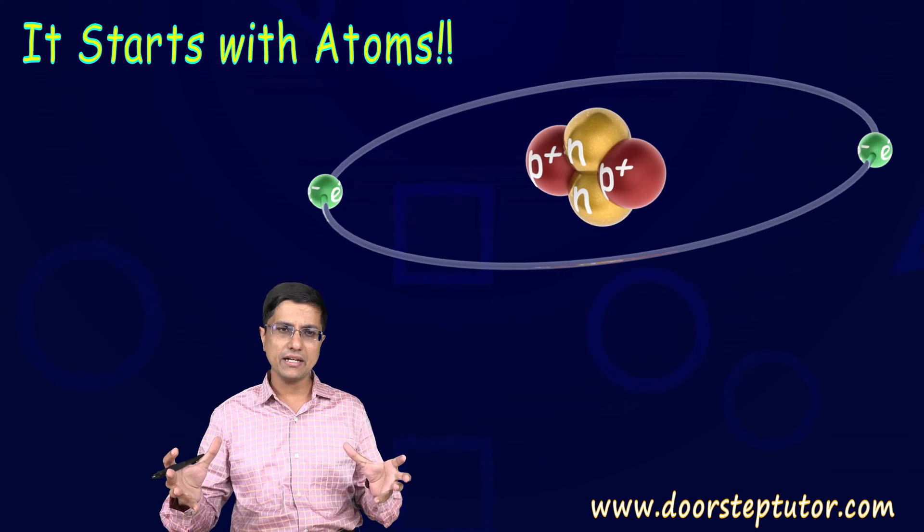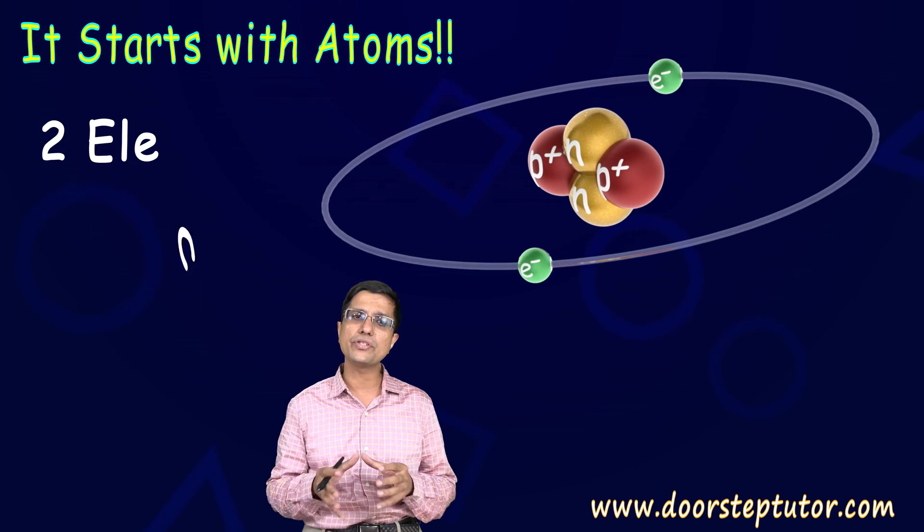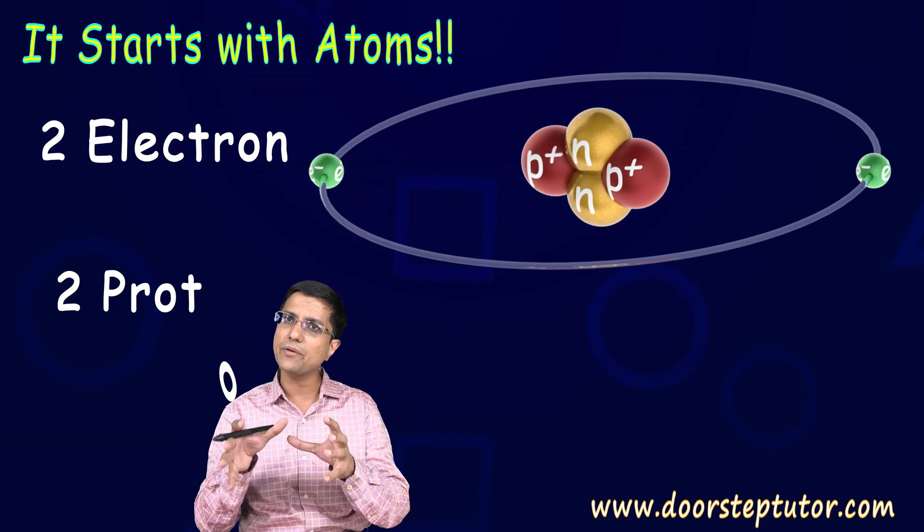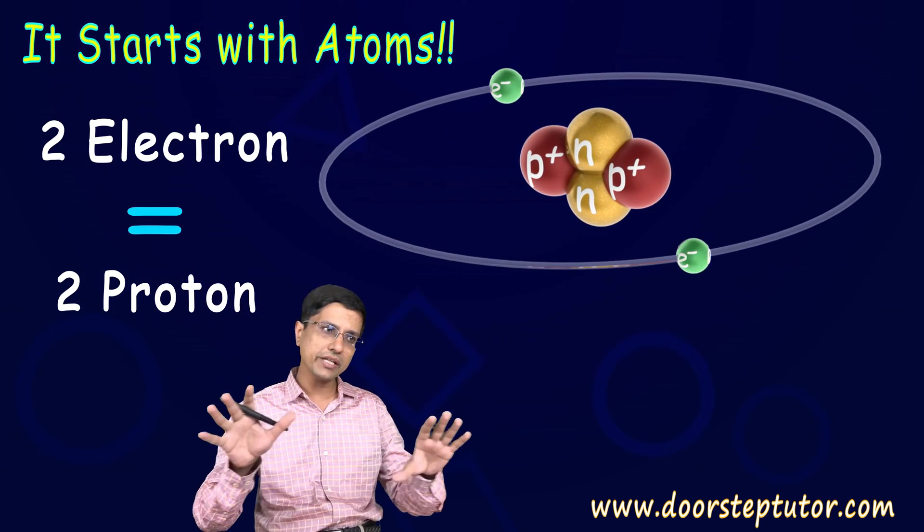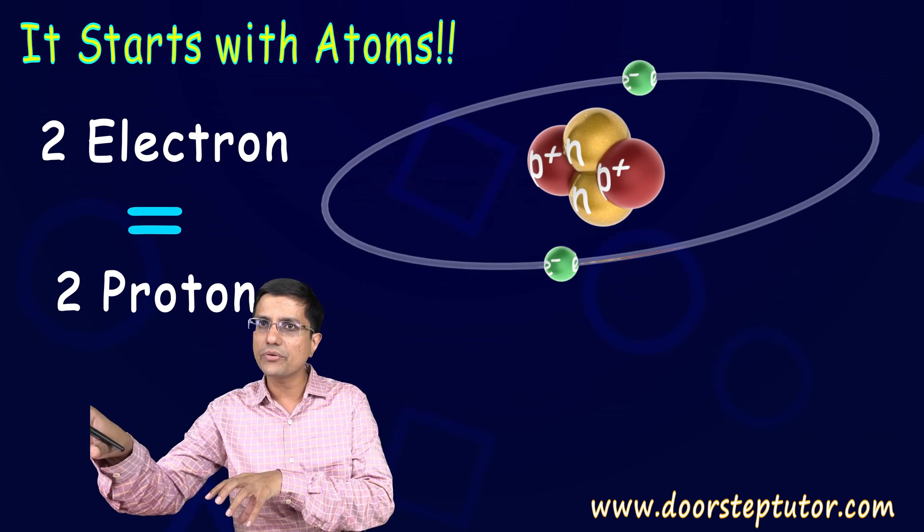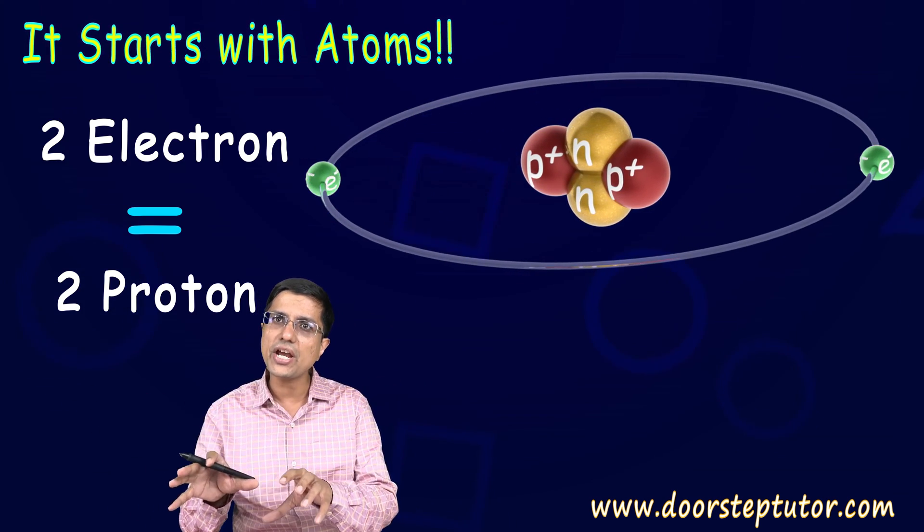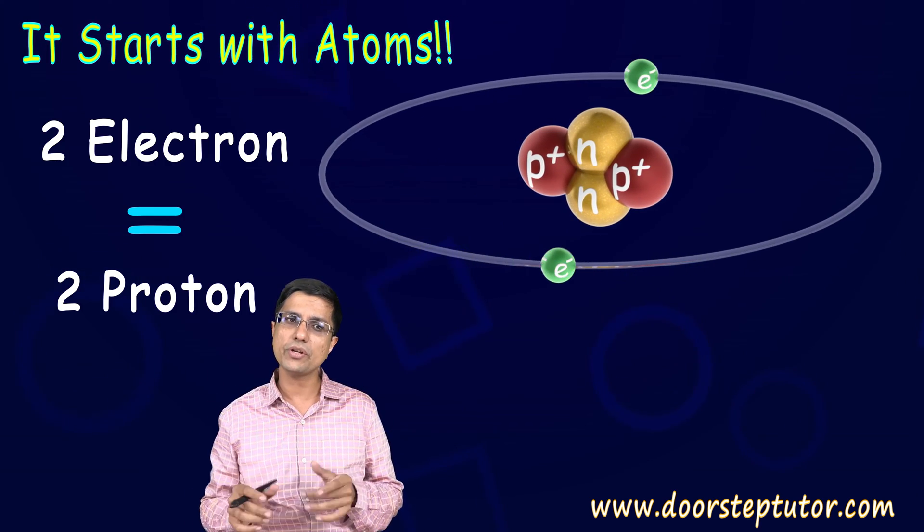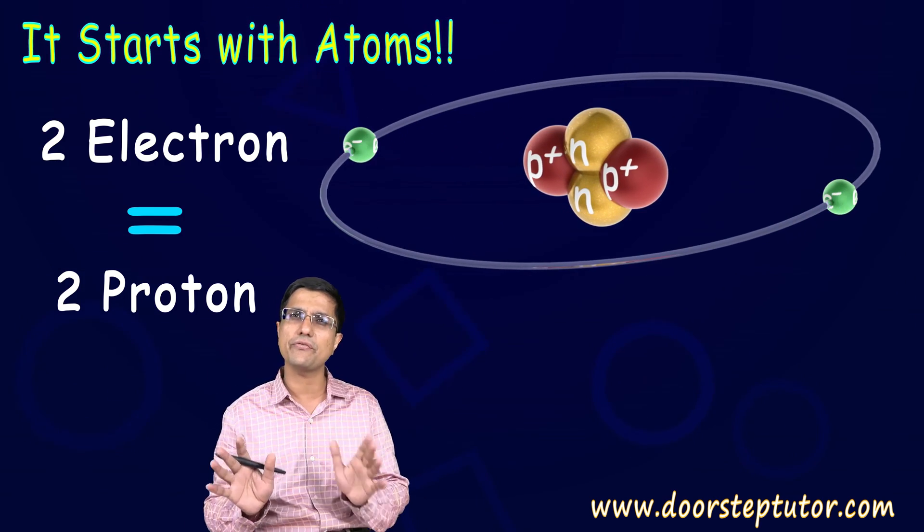Now typically the number of electrons and the number of protons in an atom is the same. If you look at things around you that is what you would find. The number of protons is equal to number of electrons. They each have one unit of charge.